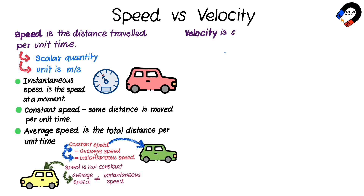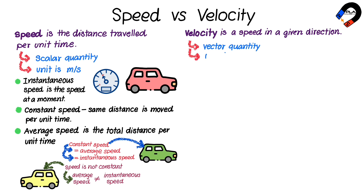Velocity is a speed in a given direction. Velocity is a vector quantity, which has both magnitude and direction. So the unit of velocity is the same as the unit of speed, which is meters per second. Velocity is a vector, which means there is a sign in front of a numerical value to indicate the direction of motion.